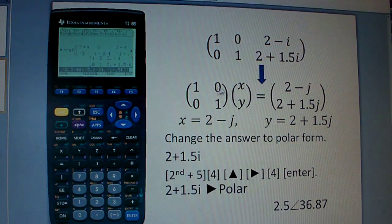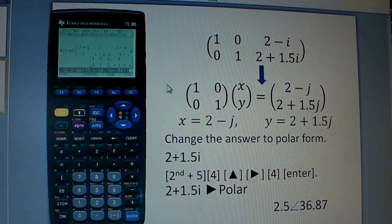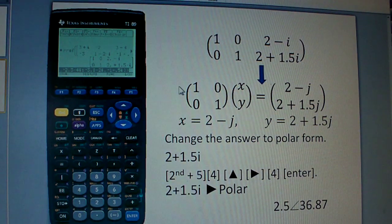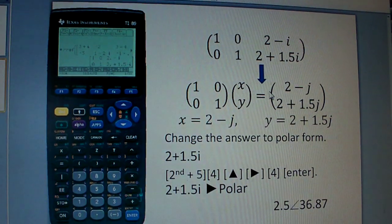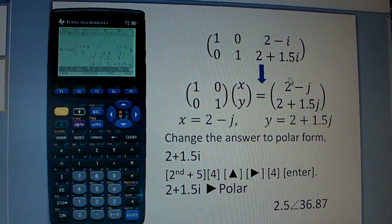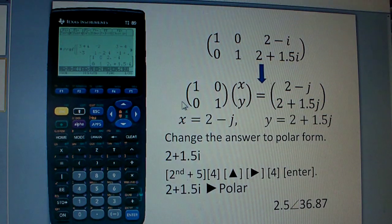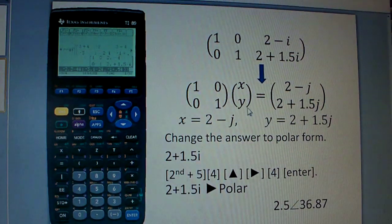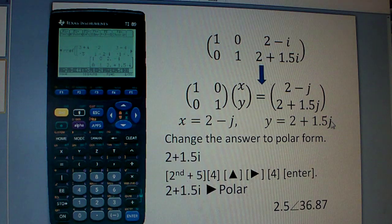Now, if you do the matrix multiplication across and down, you see that the first thing gives you X, and this RREF basically says that X is equal to 2 minus J. And again, you do across and down, you see that Y is equal to 2 plus 1.5 J.